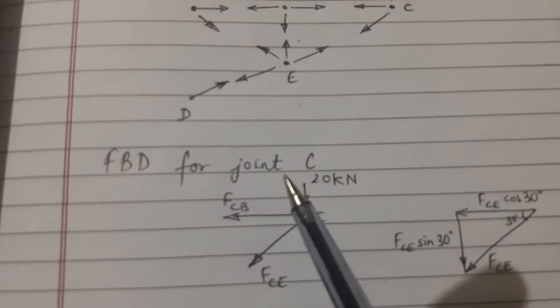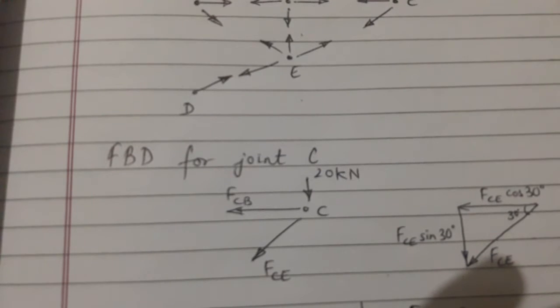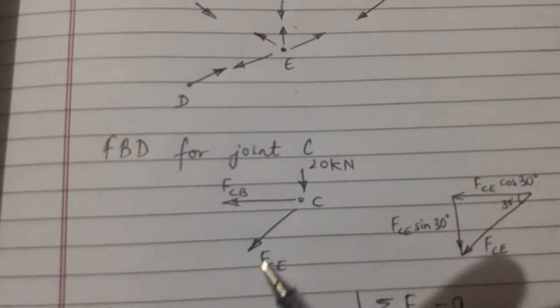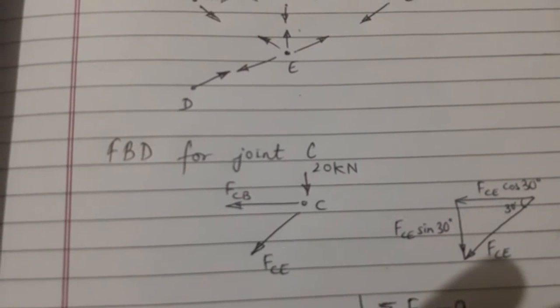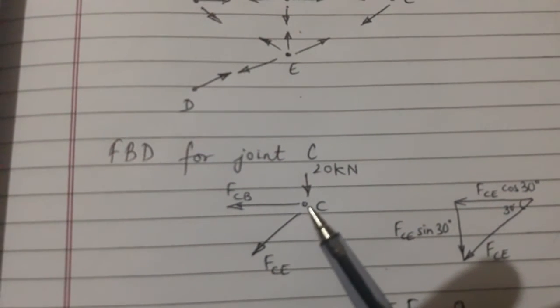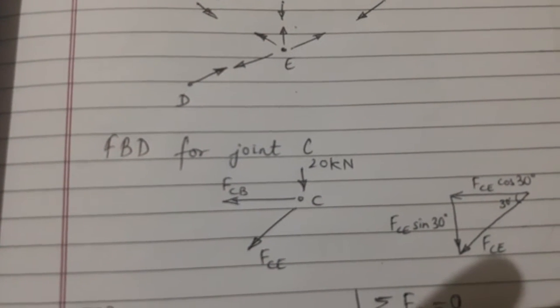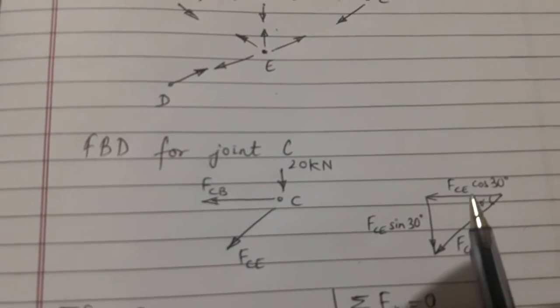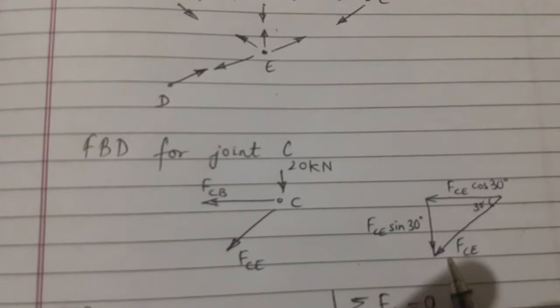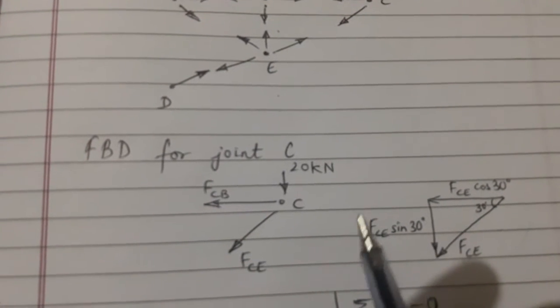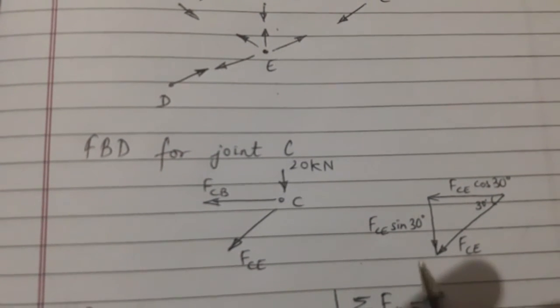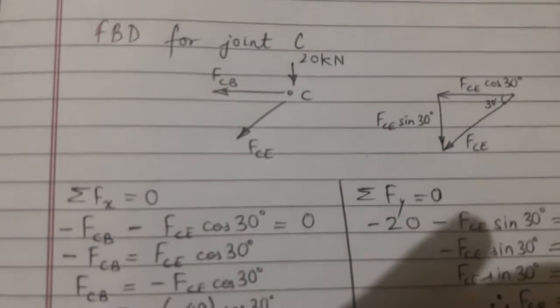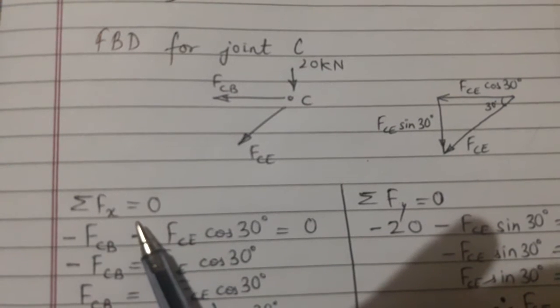Now for joint C, this is FCB or FBC, and this is FCE, and the 20 kN. Since FCE is at an angle, we will break it down into its component forces like FCE cos 30 degrees and FCE sin 30 degrees.